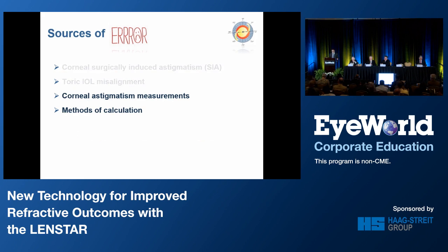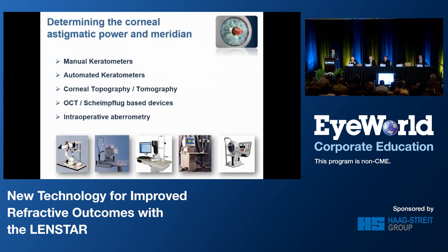Let's start with corneal astigmatism measurements. There are many devices in the market which use different technologies to measure corneal astigmatism. Most of them measure the anterior corneal measurements, but some can measure the posterior cornea as well. Furthermore, not all of them measure at the same location, and some will have better predictability and accuracy than others. It is important to be familiar with your devices and to know their strengths and weaknesses.